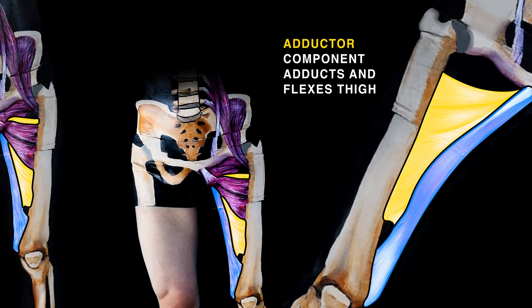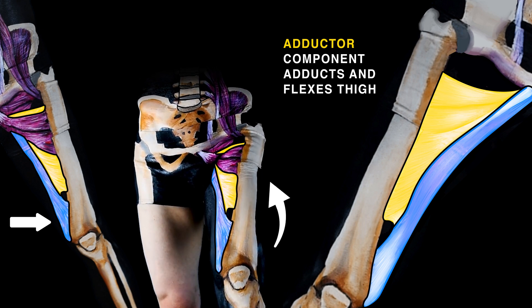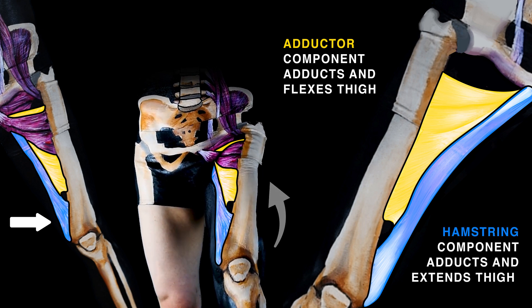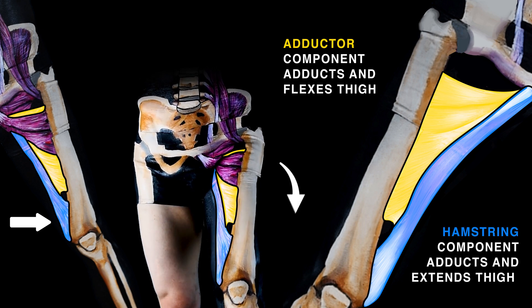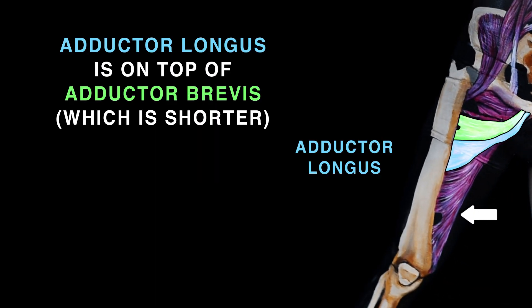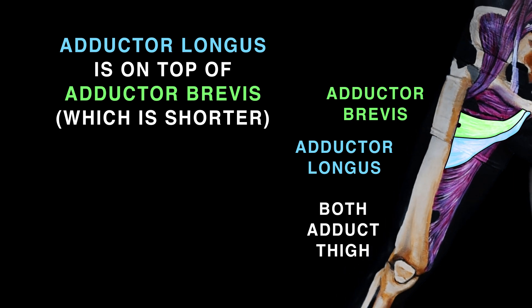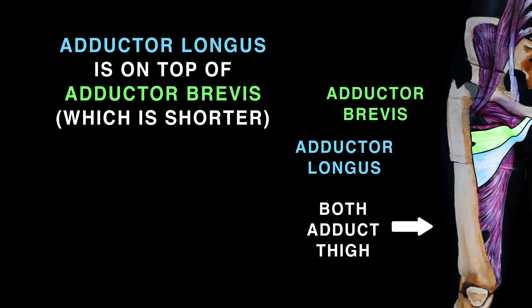The adductor component adducts and flexes the thigh, while the hamstring component adducts and extends the thigh. Adductor longus is on top of adductor brevis which is shorter. This large flat muscle adducts the thigh when given the order.